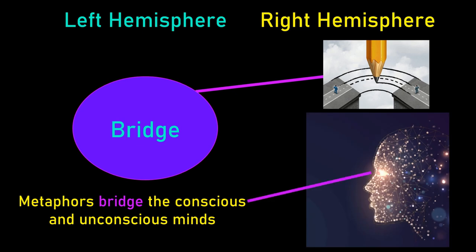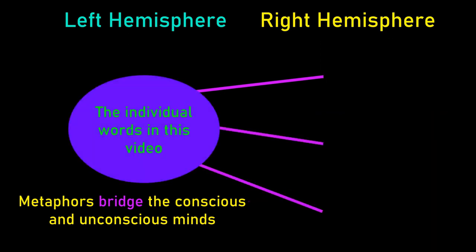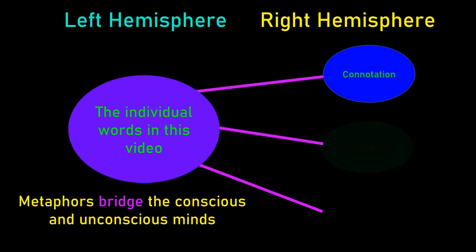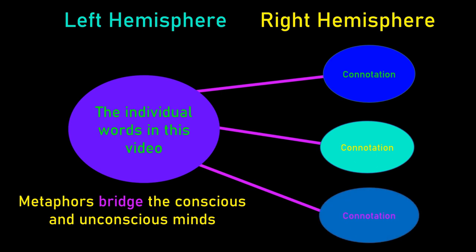For example, you are conscious of what this video is about, and your brain is making various connections between connotations which are relevant to this video, and this is what produces the feeling that you know what this video is about. The left hemisphere deals with each word individually, connects it with the connotations which are relevant to the subject, and suppresses connotations which are irrelevant. The left hemisphere also organizes the relationships between these ideas based on syntax. Thus, we can have a sense of being conscious of a very complicated idea through these connections.